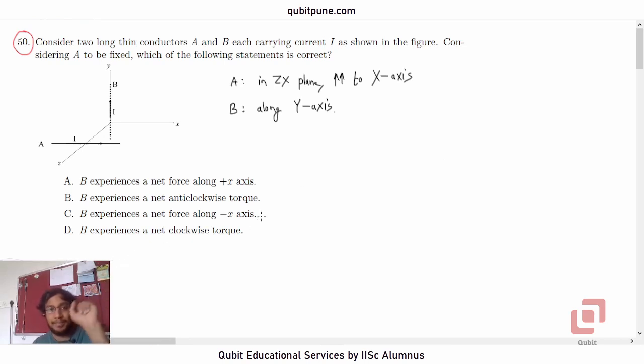F bar equals I L bar cross B bar. F bar is equal to I L bar cross B bar. If you remember, this formula can be derived from the basic formula of Lorentz force. Magnetic force on a charge moving with velocity V bar in the magnetic field B bar.